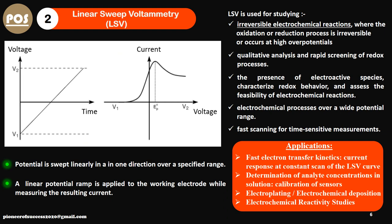Now moving to linear sweep voltammetry. To conclude on CV: we learned that CV helps us understand whether a reaction is reversible, quasi-reversible, or irreversible, and the intensity of peaks reveals the extent of reversibility and faradaic reactions. In LSV, we apply a linear ramp voltage and measure the current response. The data involved in both techniques are voltage, time, and current — we simply plot according to our need.